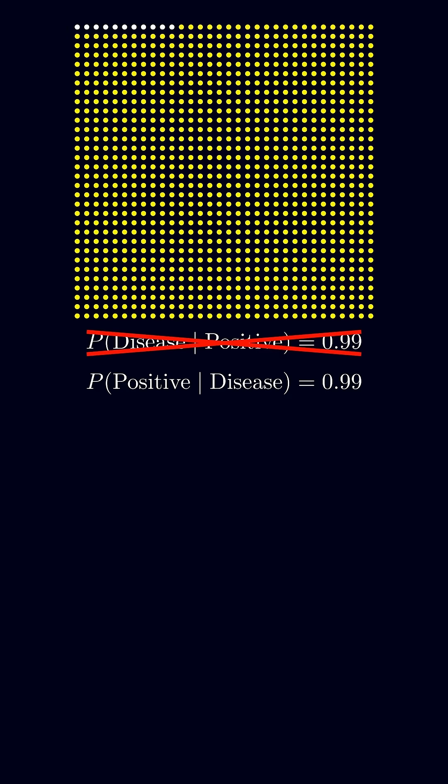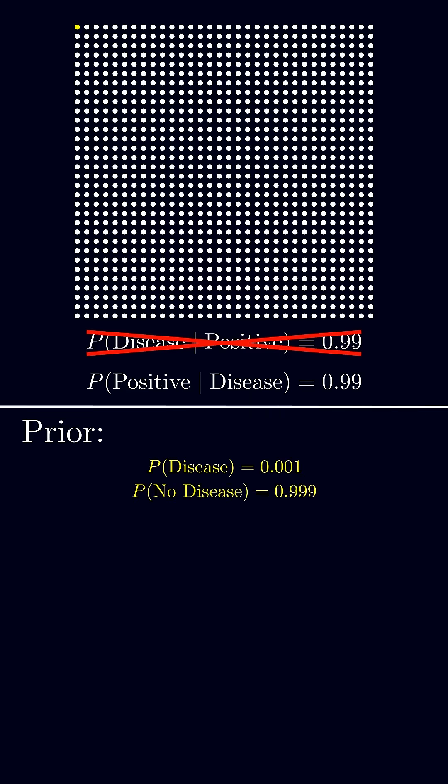But what does this mean? Well, let's imagine that the disease is rare and only affects 1 out of every 1,000 people. We know the probability of any random person we pick off the street having the disease is 0.001.